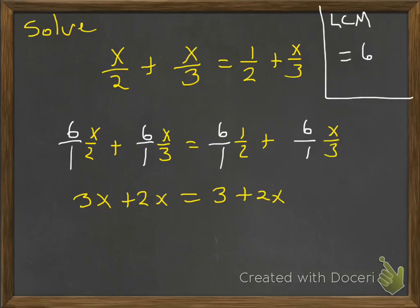Alright. Now, you see over on the left-hand side, we've got our friends there: 3x and 2x. They want to hang out together. So 3x and 2x is going to make 5x equals 3 plus 2x.